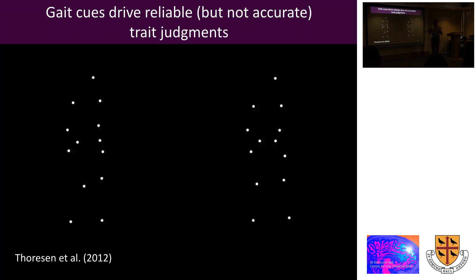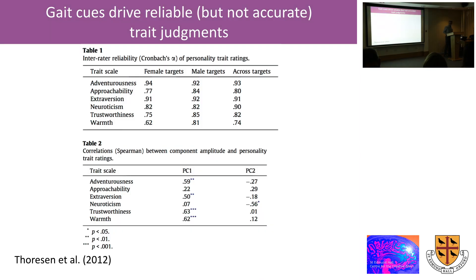We got people to just judge, rate the personality traits, and then we found that people tended to agree quite well on what sort of walking styles looked more adventurous, for example, or more approachable or more extrovert than others. But those ratings of personality traits weren't accurate in the sense that they didn't at all correlate with the self ratings of the people who were doing the walking. So the people who were doing the walking also filled out questionnaires about their own personality traits and there was no relationship at all between the self-reported personality traits and the perceived personality traits of these people doing the walking.